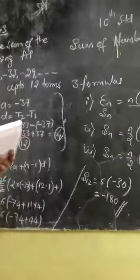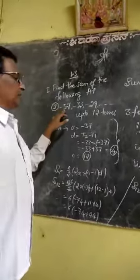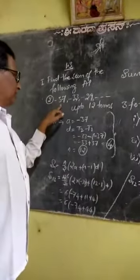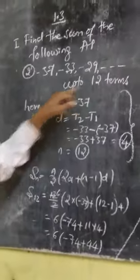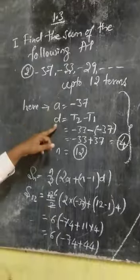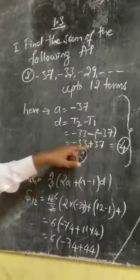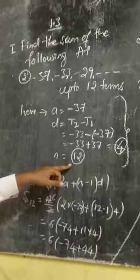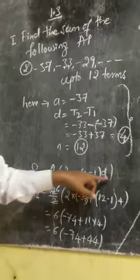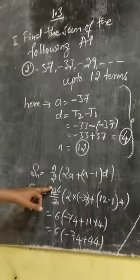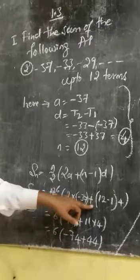So if you are not understood the sum, I will explain here again. Let us see. The sequence is here: Minus 37 minus 33 minus 29 up to 12 terms. A is here minus 37. D is here T2 minus T1, minus 33 minus minus 37. So, minus 33 plus 37 is equal to 4. N is equal to 12. So, SN is equal to N upon 2 into bracket 2A plus N minus 1 D. So, N upon 2 is here 12 upon 2. Into bracket 2 into minus 37 plus N is here